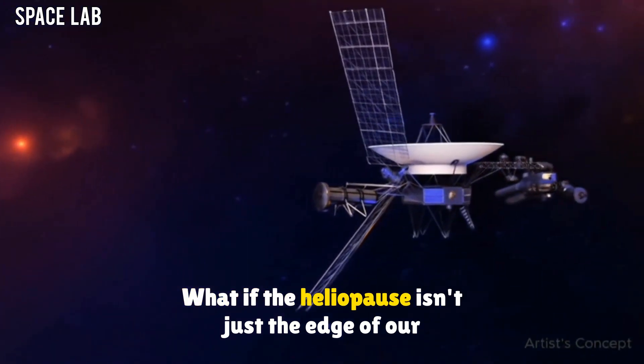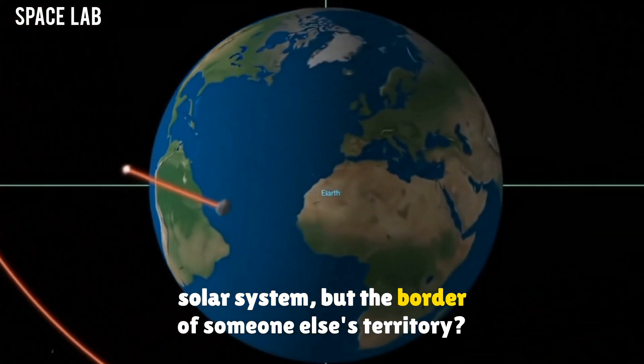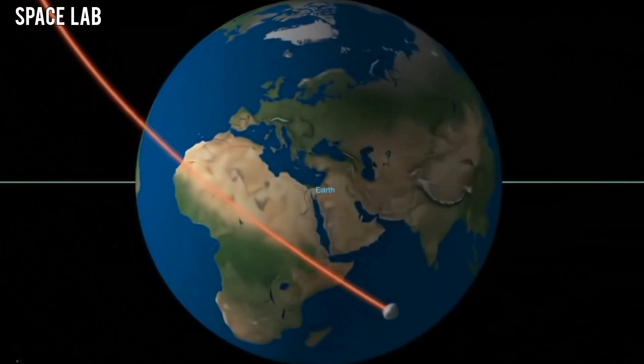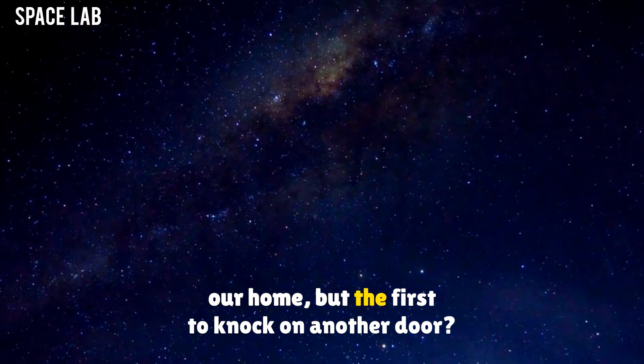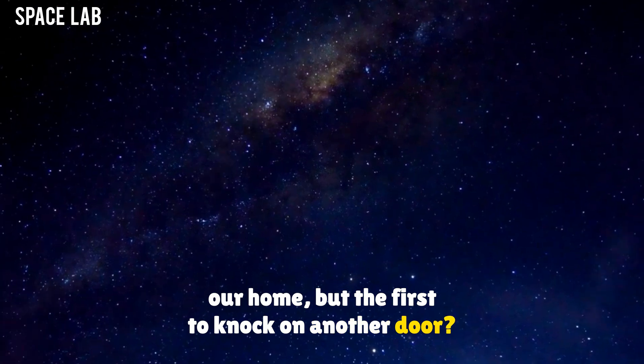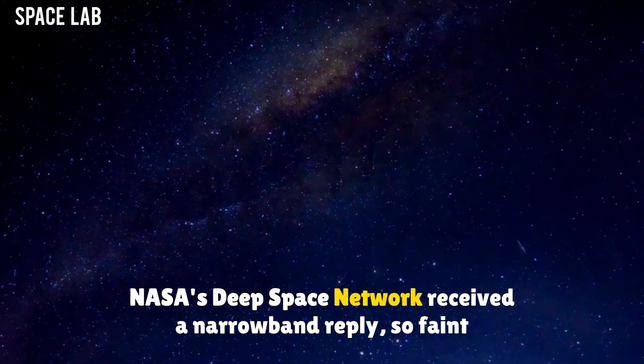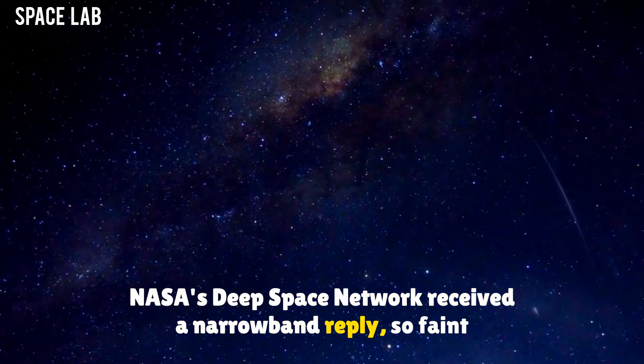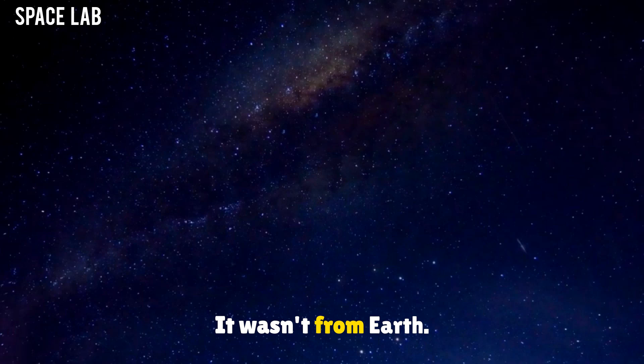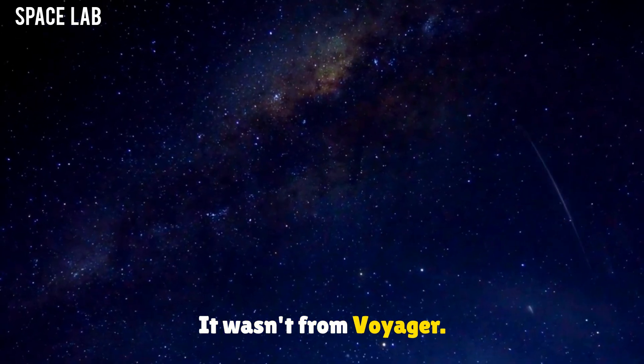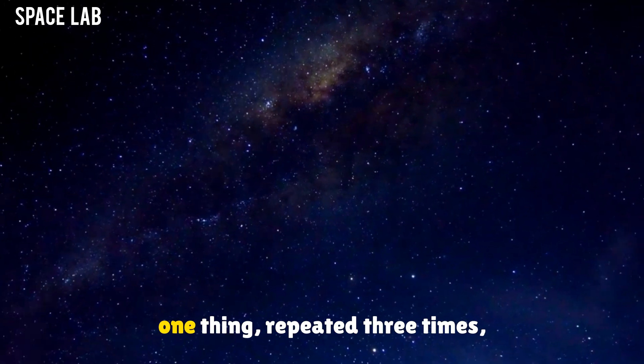What if the heliopause isn't just the edge of our solar system, but the border of someone else's territory? What if Voyager 1 wasn't just the first to leave our home, but the first to knock on another door? The final nail in the coffin? NASA's Deep Space Network received a narrowband reply, so faint it almost went unnoticed. It wasn't from Earth. It wasn't from Voyager. But it was on Voyager's frequency.